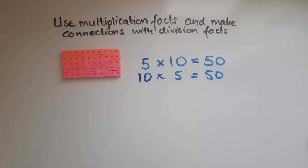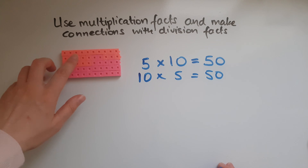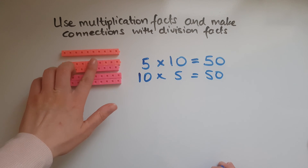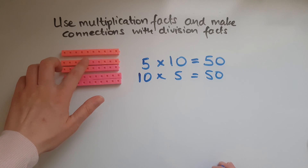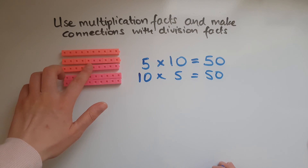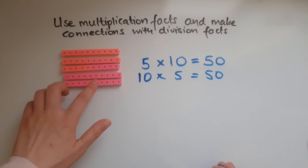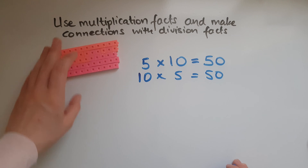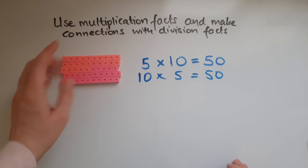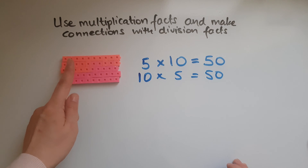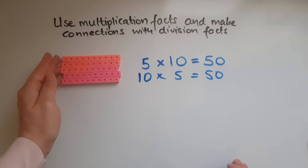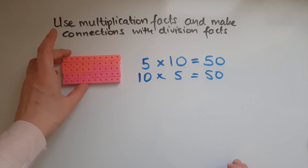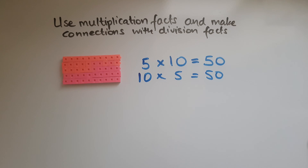I could also say 10 lots of 5, because what I've got is 10 columns of 5 in each column, and either way that gives us the same answer — that total of 50. It is in a way like adding on: 10 and 10 and 10 and 10 and 10 makes 50, or adding 5 and 5 and 5 and 5 and 5 and so on to make 50.